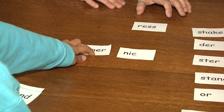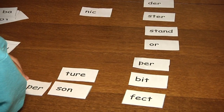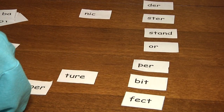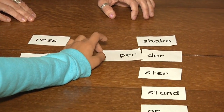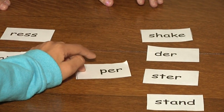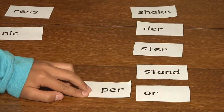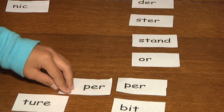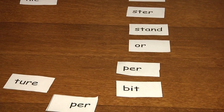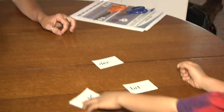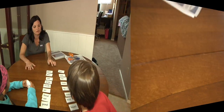Person. Yes. Perfect. Yes. Orbit. Yes. Good job. Keep playing until all the syllable cards are gone.